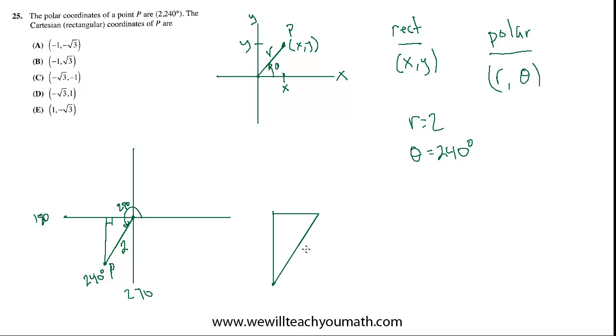That triangle has a hypotenuse of 2. A right angle here. And this angle is going to be 60 degrees. That's the reference angle. That's how much of the 240 lies below the horizontal axis. Which means this angle is going to be 30. Because the sum of the measure of the internal angles of any triangle has to add to 180.